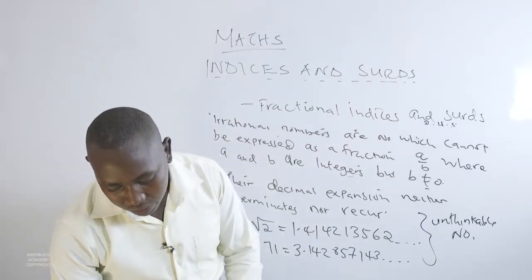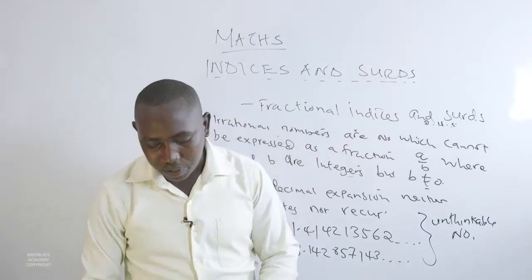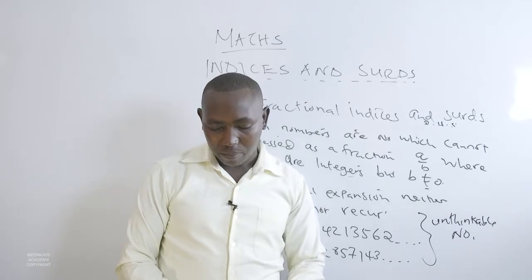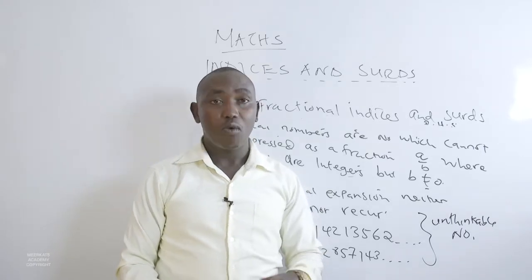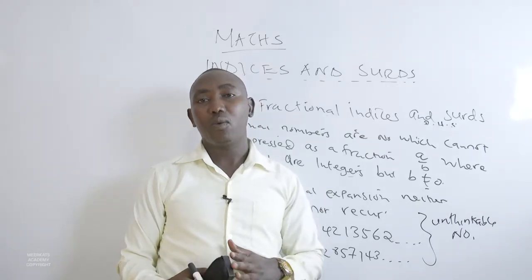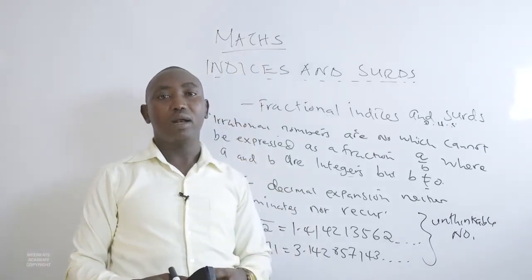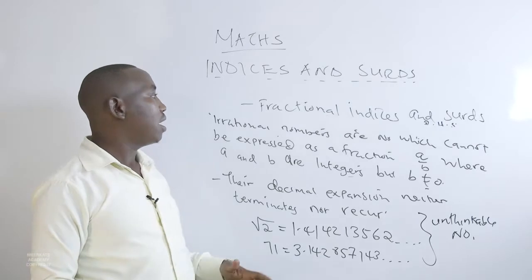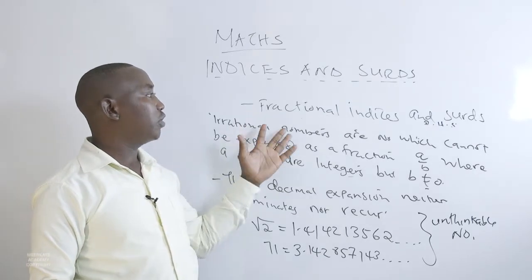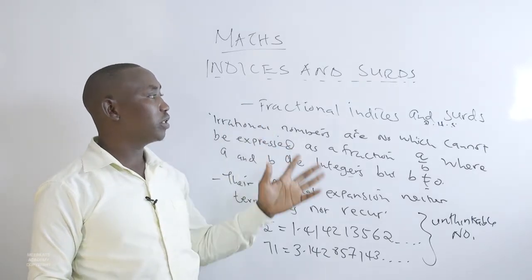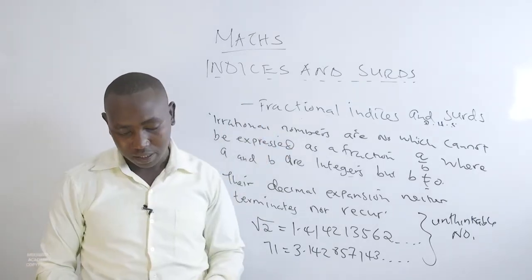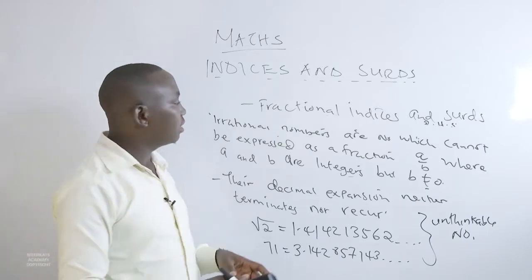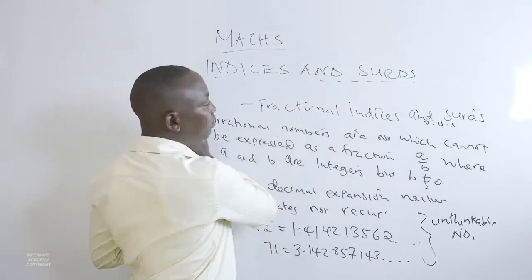Around 560 BC, mathematicians who tried to express pi up to 100 decimal places were frustrated because the numbers neither terminated nor recurred. They referred to such numbers as 'unthinkable numbers,' and had very strict rules — if you were heard mentioning these irrational or unthinkable numbers, you were sentenced to death.